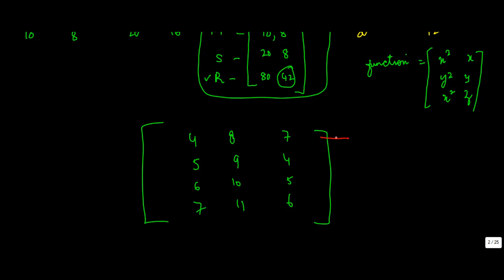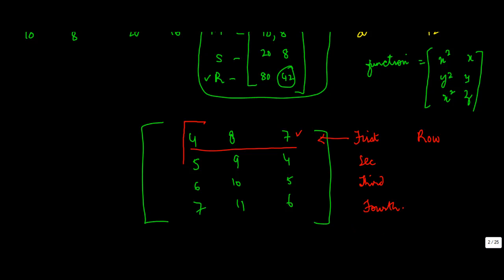The horizontal placement in a matrix is called a row. The one on the top is called the first row, followed by the second, third, fourth, and so on. The vertical placement is known as the column of a matrix — this is the first column, this is the second column, and this is the third column.